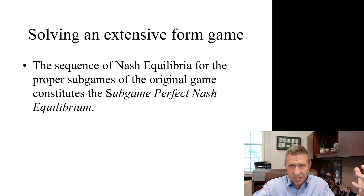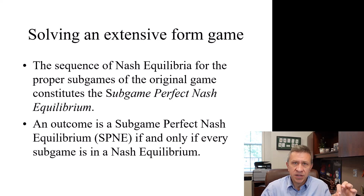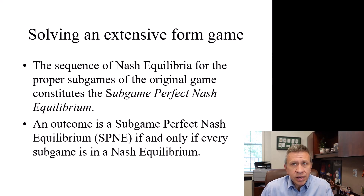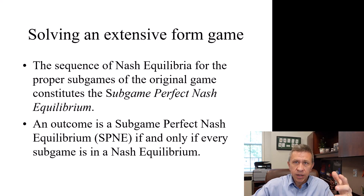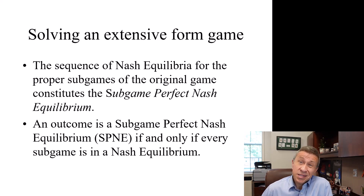What is the overall equilibrium in a sequential game? It's referred to as the sub-game perfect Nash equilibrium — that is the equilibrium when every single sub-game is in equilibrium and the entire game is in equilibrium. It might actually make a little more sense as we solve.